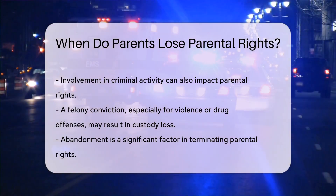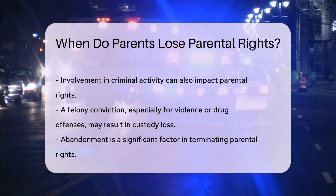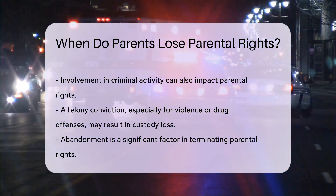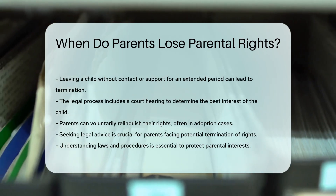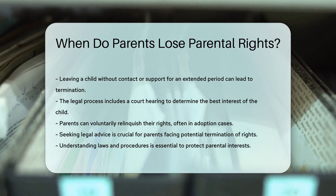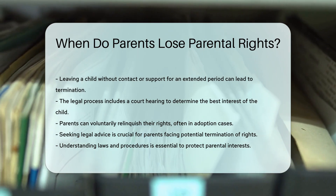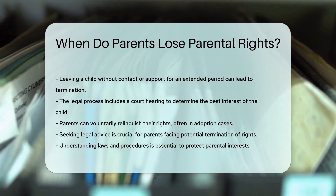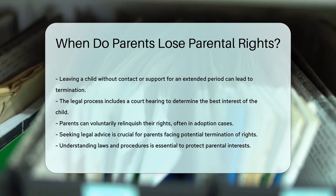The legal process for terminating parental rights typically involves a court hearing. The state must prove that termination is in the best interest of the child. Parents can also voluntarily relinquish their rights, which often occurs in cases of adoption or when a parent cannot fulfill their responsibilities. It is crucial for parents to seek legal advice if they face potential termination of their rights. Understanding the laws and procedures can help protect their interests.